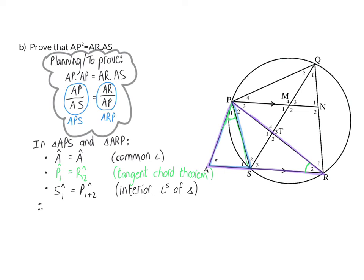Now we can make the conclusion that triangle APS is similar to triangle ARP, and my reason is angle, angle, angle. I need to find the correct ratios to get to my product that I need to prove. When I write down my ratio, the first two letters AP and AR will form the same ratio as the last two letters PS and RP, and the same as the first and last AS and AP. My reason? Similar triangles.